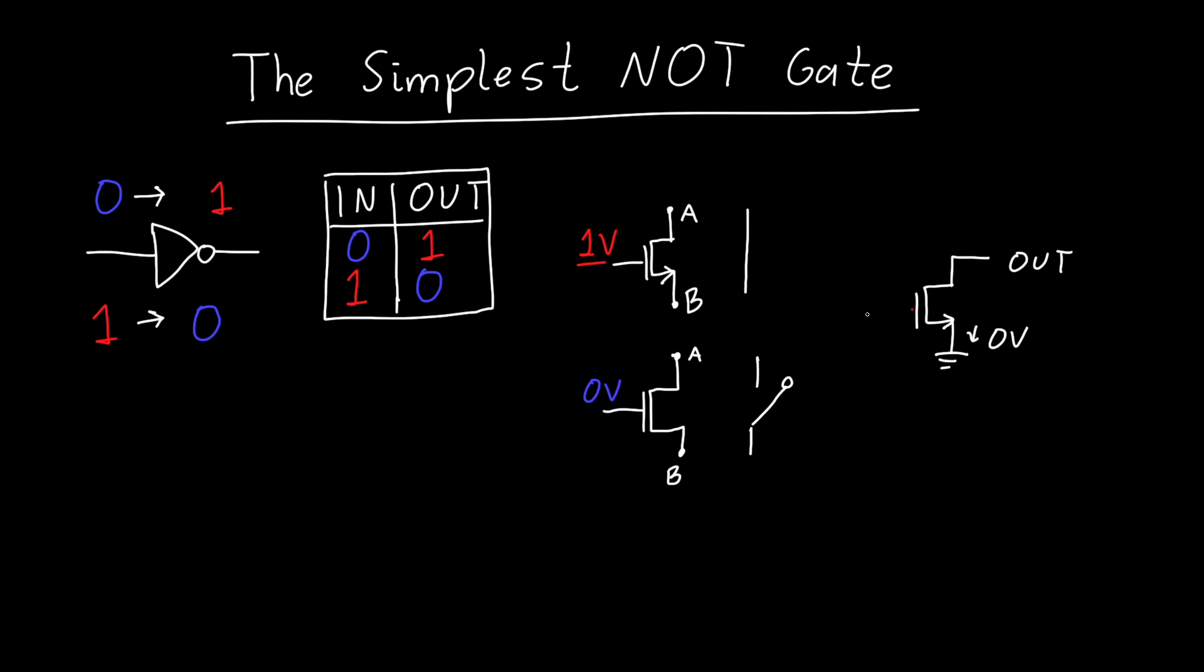But the problem is, when we apply zero volts to this transistor, because it's open, the output isn't connected to anything. So we can't just make a NOT gate with a single transistor, we have to add something else.